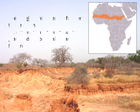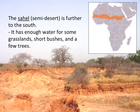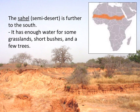The next region we're going to talk about is the Sahel, or Sahil — depending on how you want to pronounce it. The Sahel, which stands for semi-desert, is further to the south. One thing you should also know is that this area is becoming more desert-like because of global climate change. Global climate change is causing the Sahara Desert to creep further south, pushing the Sahel region further south as well. This area has enough water for some grasslands, a few bushes, and a few trees, but it's still a pretty dry and unpleasant place that cannot support large human settlements. It also has a lot of conflict over natural resources and water, and those conflicts have increased over time due to global climate change.